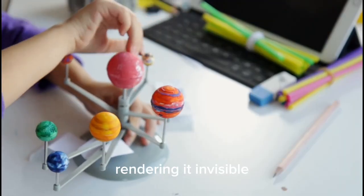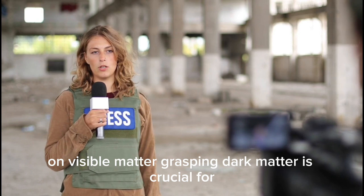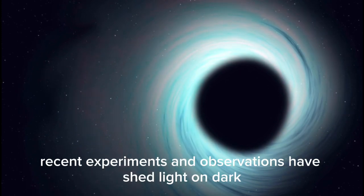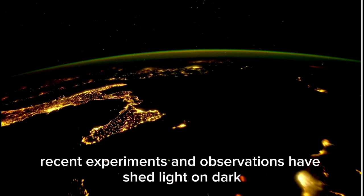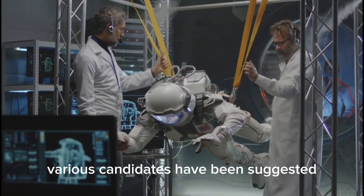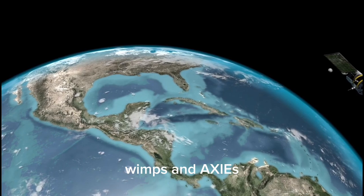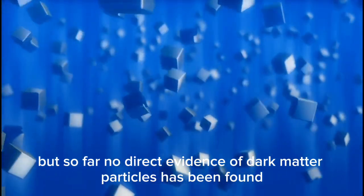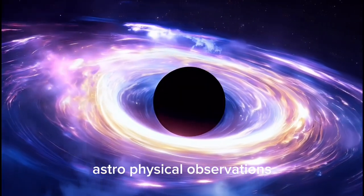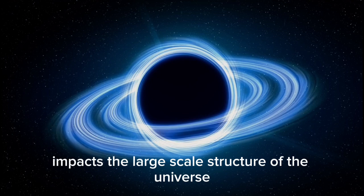Unlike regular matter, dark matter neither emits, absorbs, nor reflects light, rendering it invisible and detectable only through its gravitational effects on visible matter. Grasping dark matter is crucial for clarifying the formation and dynamics of galaxies. Recent experiments and observations have shed light on dark matter's characteristics, yet its precise nature remains elusive. Various candidates have been suggested, including weakly interacting massive particles, WIMPs, and axions, but so far no direct evidence of dark matter particles has been found. The search persists through a combination of ground-based experiments, astrophysical observations, and simulations.